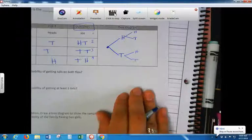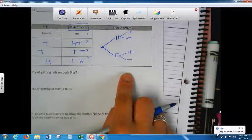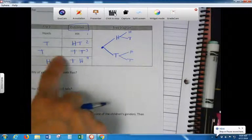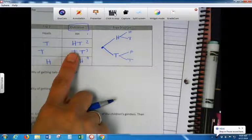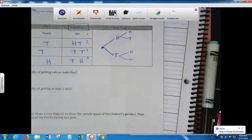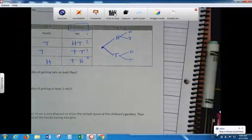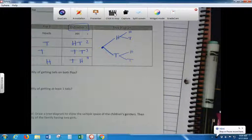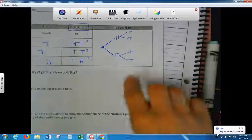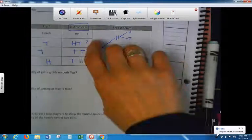This is a tree diagram. It represents exactly what we did over here, just in a different format. Now, count all the end branches, all the ones that stick out. How many end branches are there? Four. One, two, three, four. The same thing as this.